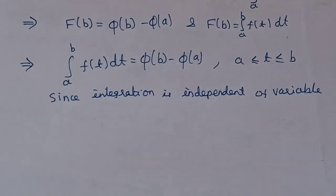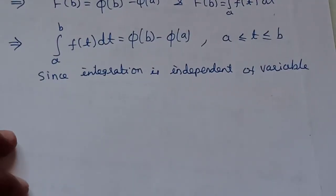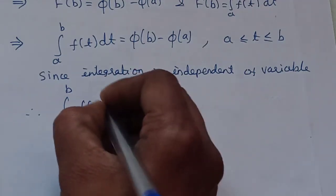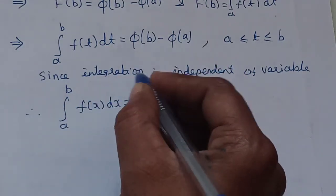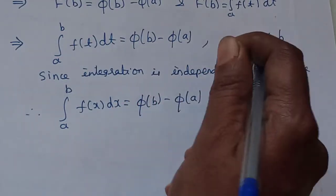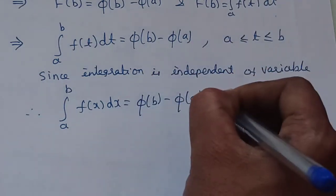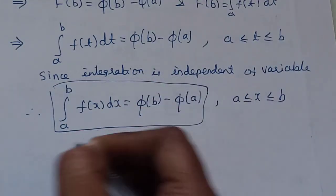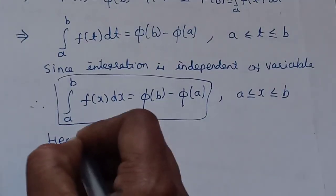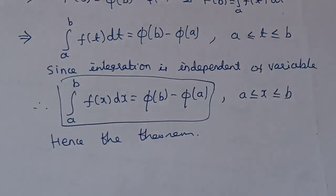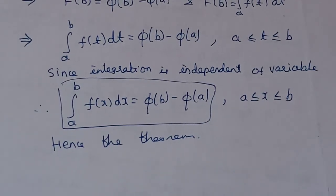So the integral from a to b of f(t) dt equals phi(b) minus phi(a), for a less than or equal to t less than or equal to b. The result is proved. Thank you.